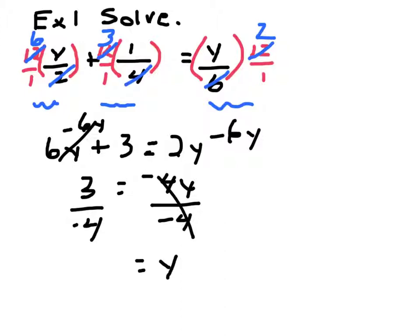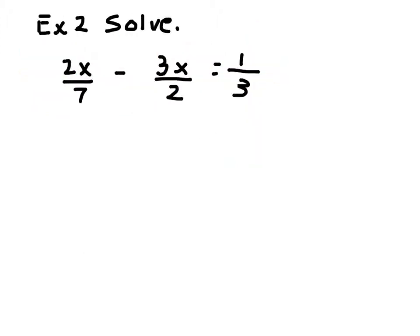And really, I can leave it as a negative 3 fourths because 3 over 4, they don't divide evenly. And 3 fourths is in lowest terms. So, my solution is a negative 3 fourths. Now, really, example 2 is about the same type of example, except it's going to be a little harder to find that least common multiple.